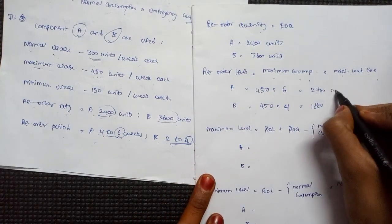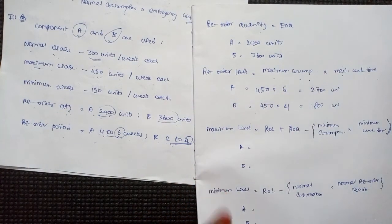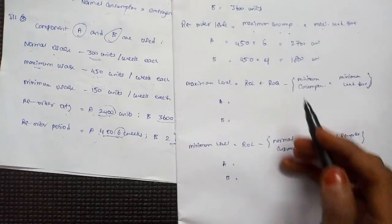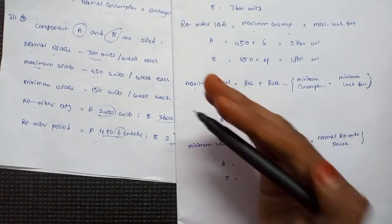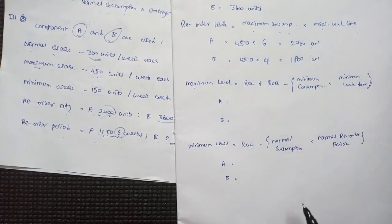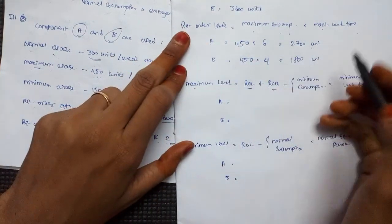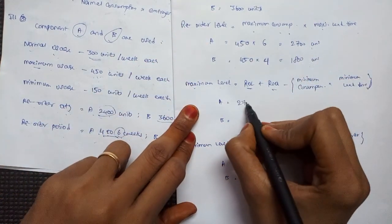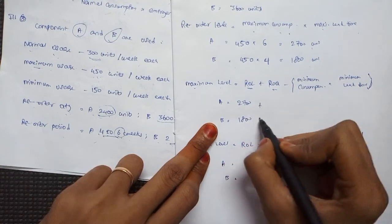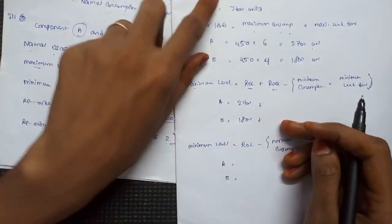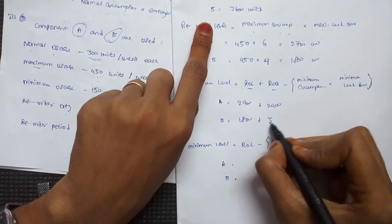Now we calculate the maximum level. For component A: reorder level is 2,700. For component B: reorder level is 1,800. After adjusting, for A the maximum level comes to 2,700 plus reorder quantity minus minimum consumption into minimum lead time, giving approximately 3,800 units for B.